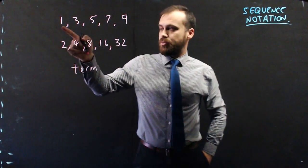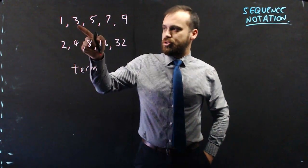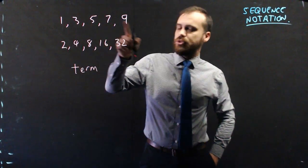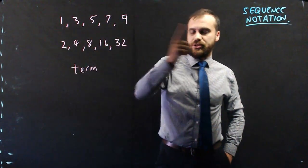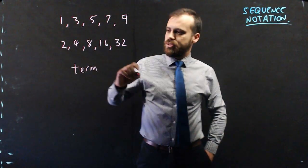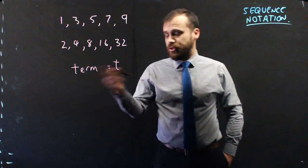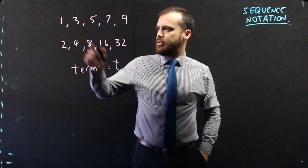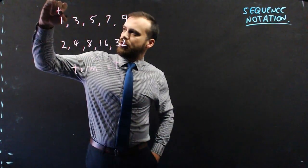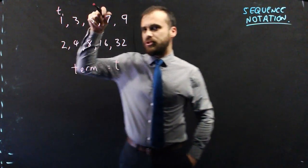Now this one is called term 1. This is term 2, term 3, term 4, term 5. We just count up the terms. Now we can use the letter T as short for term. And this is term 1. That's a subscript, a small 1 next to the T.